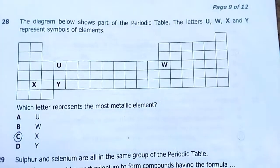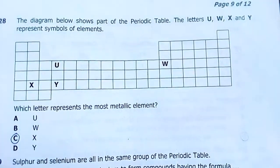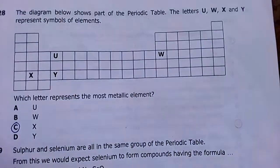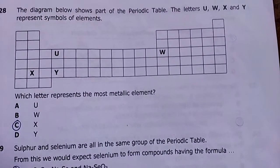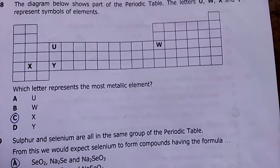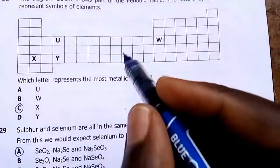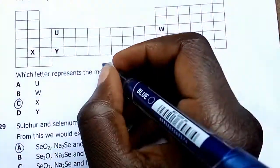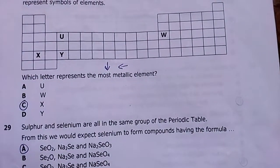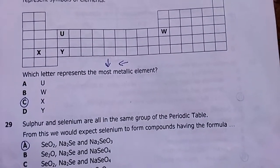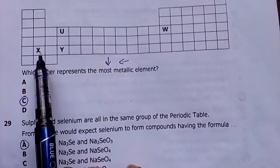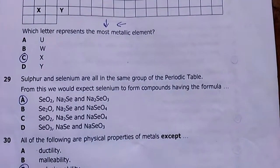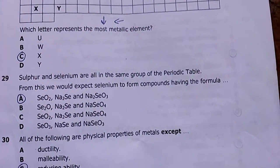Number twenty-eight: the diagram shows part of the periodic table with letters U, W, X and Y representing elements. Which letter represents the most metallic element? Metallic character increases as you move left and downward on the periodic table. Therefore the most metallic is X. My answer is C.